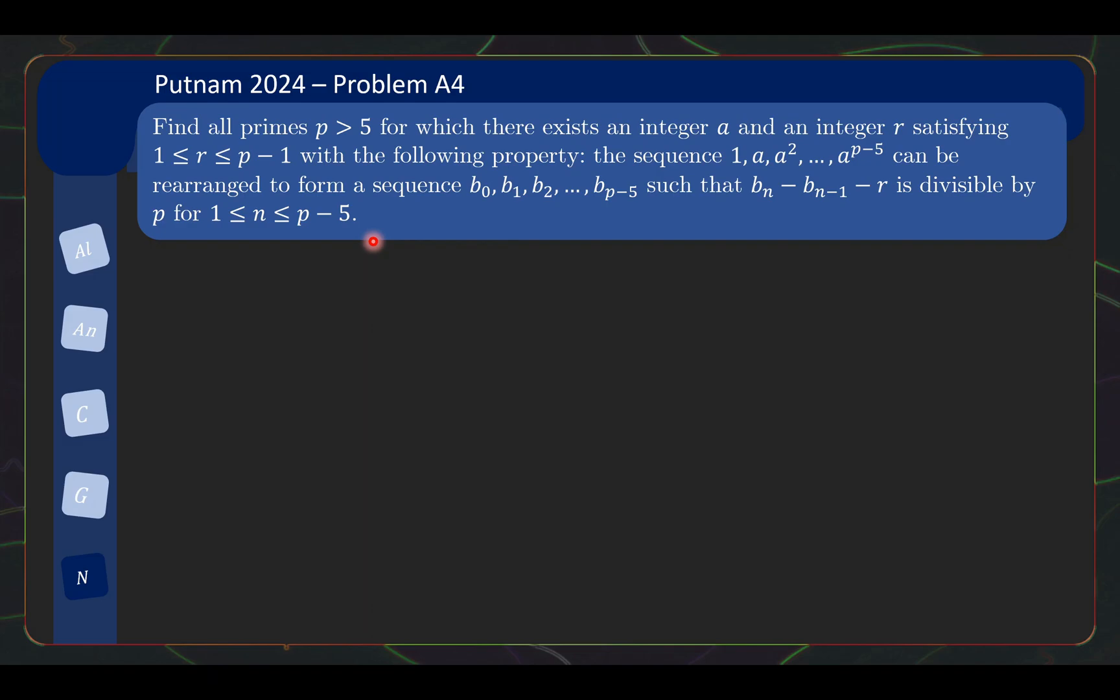If you're like me, this problem statement probably just flew over your head. It's actually a bit hard to digest it on first reading. So I am going to try and break it down for you first. What you need to do is basically first understand what is this property talking about. What this property is saying is that when you have your sequence 1, a, a², ..., a^(p-5), it can be rearranged into another sequence, so these are all your powers of a, they become rearranged to a different sequence which are your b's, such that the difference between consecutive terms are all congruent to the same r modulo p.